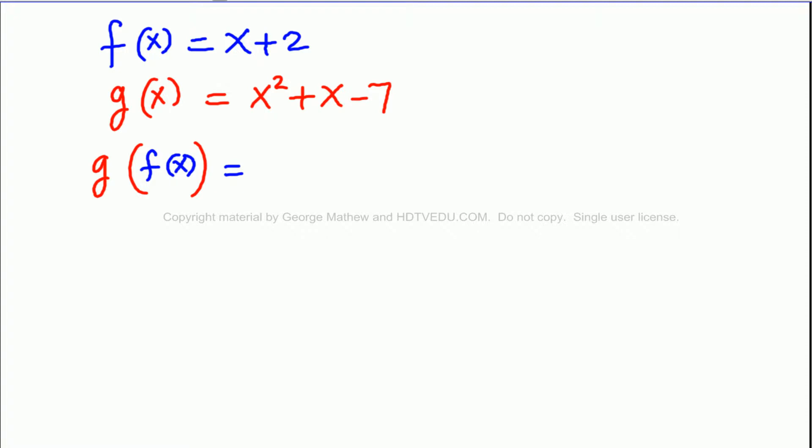We are told that f of x equals x plus 2. g of x equals x squared plus x minus 7. What is g of f of x? So, the first thing we do is we write everything as before except for x. And in the space occupied by x, we substitute f of x. What is f of x? x plus 2.